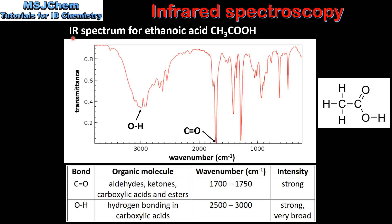The next infrared spectrum we look at is for ethanoic acid. The first peak occurs at a wave number of approximately 1700 cm⁻¹. By looking in the table we can see that this corresponds to a carbon-to-oxygen double bond in aldehydes, ketones, carboxylic acids, and esters. The second peak occurs at approximately 3000 cm⁻¹, which corresponds to an O–H bond in carboxylic acids. Looking at the structural formula for ethanoic acid, we can see it contains a C=O bond and an O–H bond.